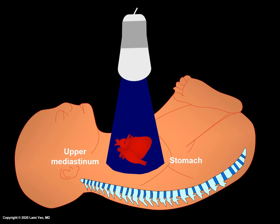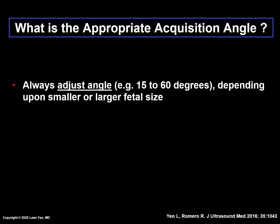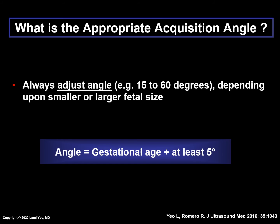With the four-chamber view as the acquisition plane and applying appropriate settings, the volumetric ultrasound probe should automatically sweep from the fetal upper mediastinum down to the stomach. What is the appropriate acquisition angle? This depends on the gestational age, which affects the fetal size. The angle should always be adjusted depending on a smaller or larger fetal size. One example of the range of acquisition angles on an ultrasound machine is 15 to 60 degrees. We have developed a general rule of thumb in which we take the gestational age and add at least 5 degrees to determine the acquisition angle. Therefore, if a fetus is 25 weeks of gestation, we set the acquisition angle to 30 degrees.